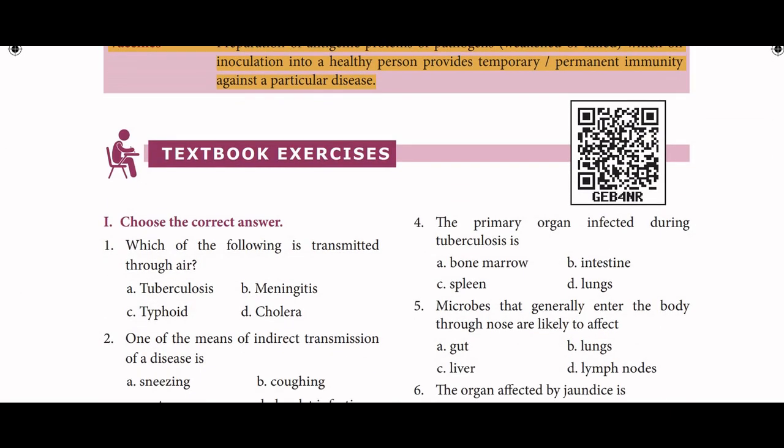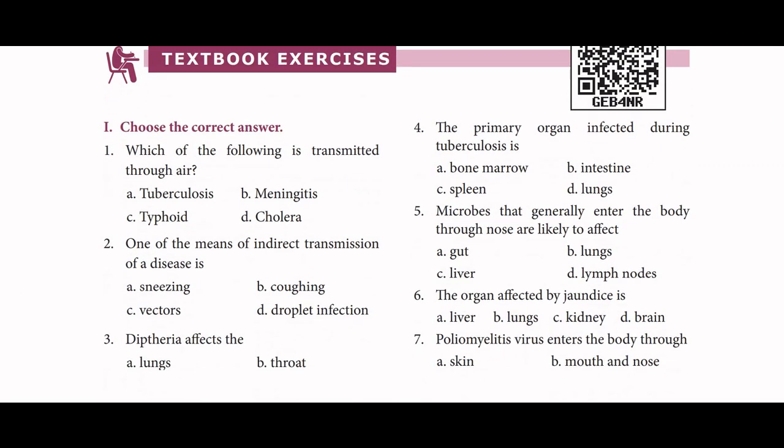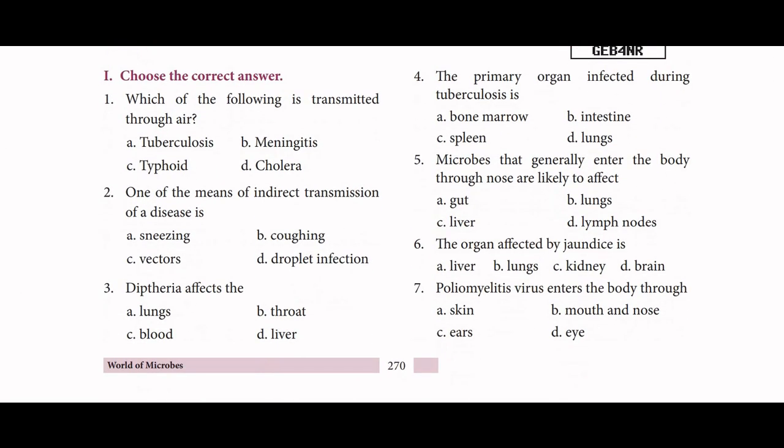So first, choose the correct answer. Which of the following is transmitted through air? Tuberculosis — TB. Next, second one: one of the means of indirect transmission of diseases.